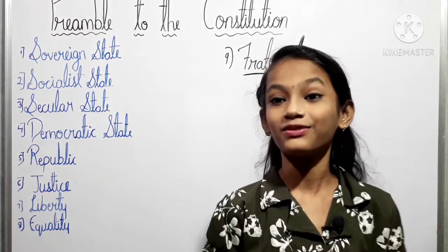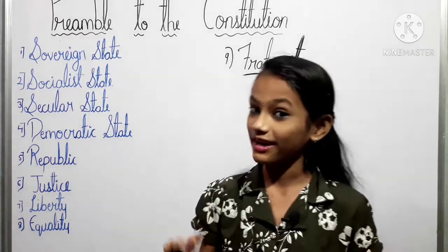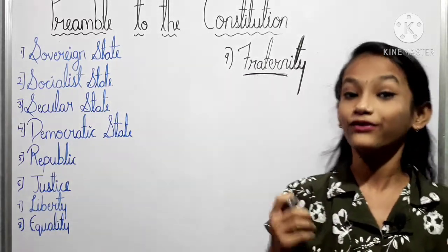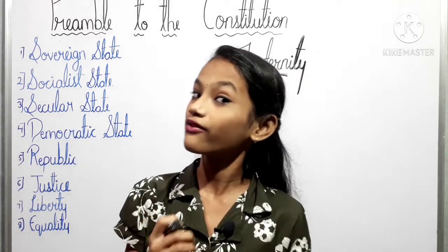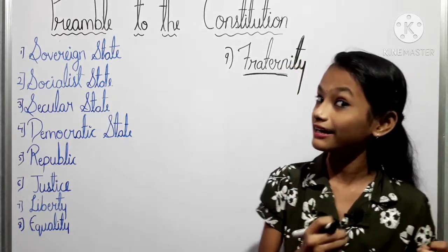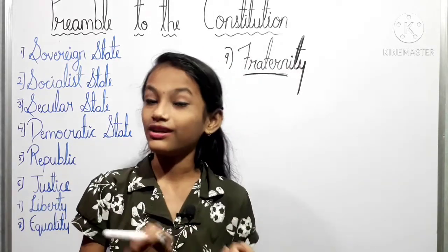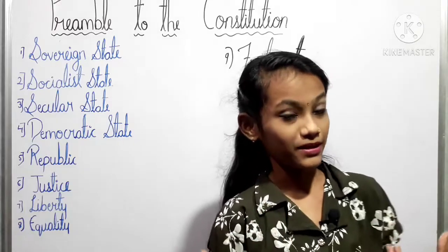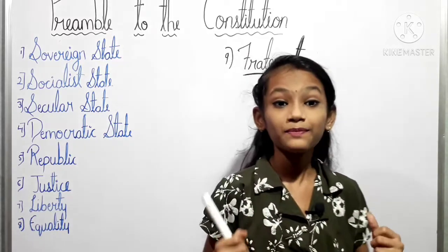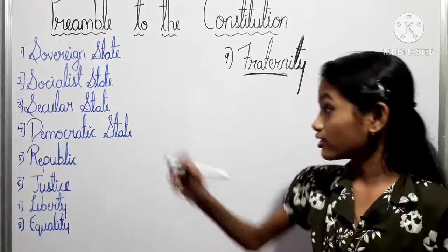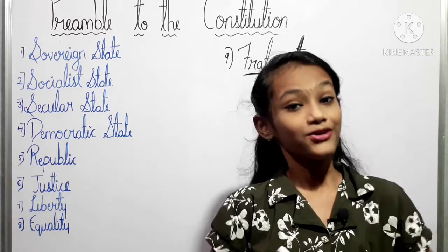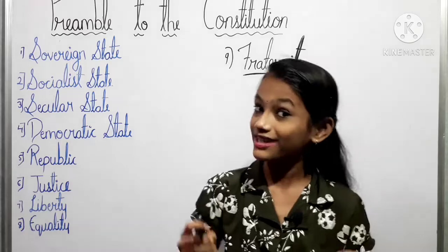The preamble starts with the words 'We the people of India.' It talks about the resolve of the Indians to constitute India into a sovereign state, socialist state, secular state, democratic state, and republic. Now we shall understand the meaning of each of these terms.